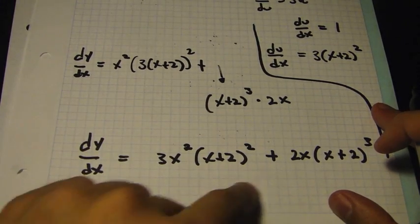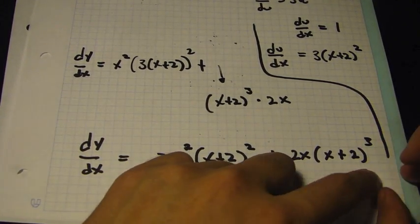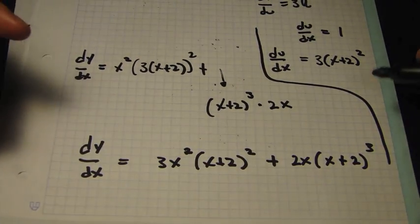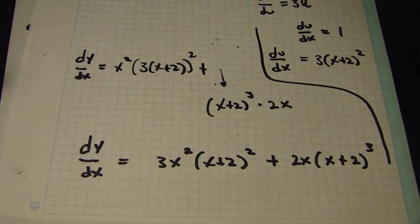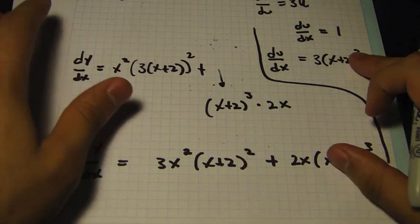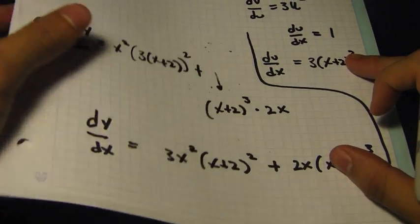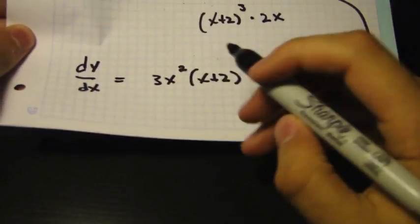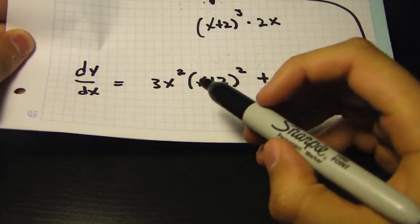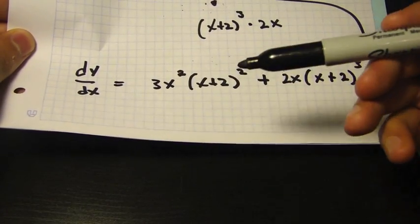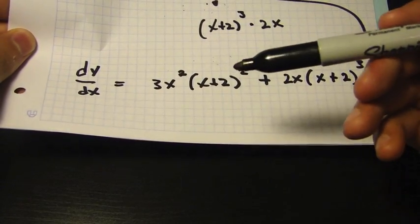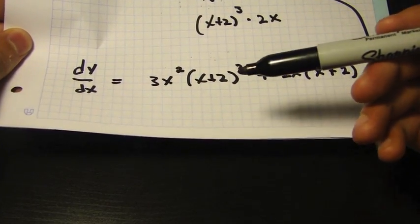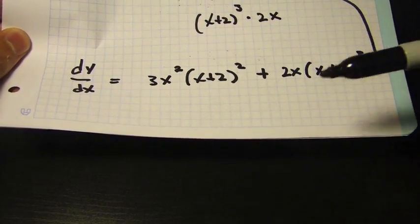That's your final answer for this example. You can actually factor it down even more, but I'm not going to do that in this video. For the IB, you do have to factor and simplify it even further for the final answer.